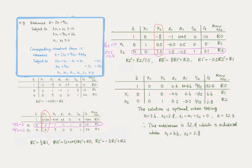We can double-check that this solution fulfills the original linear programming problem. With x1 equals 3.6 and x2 equals 2.8, we get 2x1 plus x2 exactly equals 10, which means it satisfies the inequality, and 3x1 plus 9x2 equals 36, which also fulfills its inequality. Notice that a1 equals 0, so it did not contribute any value to the left-hand side of the constraints. Therefore, it is 2x1 plus x2 itself which gives a value greater than or equal to 10.